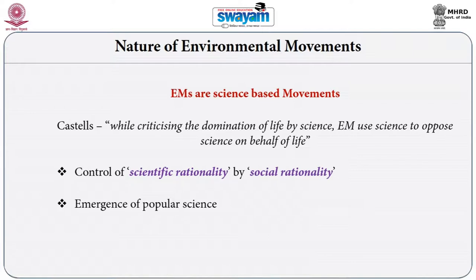Environmental movements talk about a new breed of scientists who use scientific knowledge for the benefit of the people. Rather than using scientific or technological knowledge for industrialization and development, environmentalists talk about popularizing scientific knowledge — people's science. It talks about using scientific method and data to support people's claim for a better life.